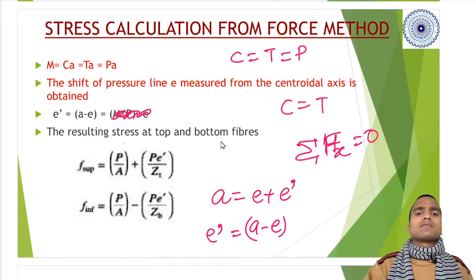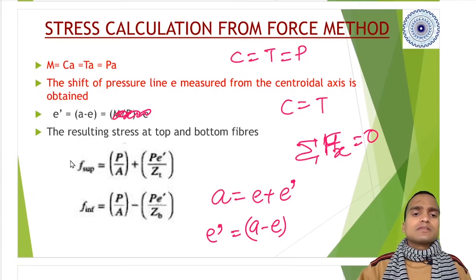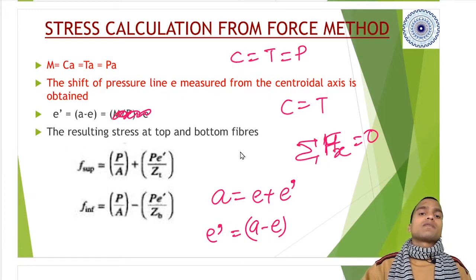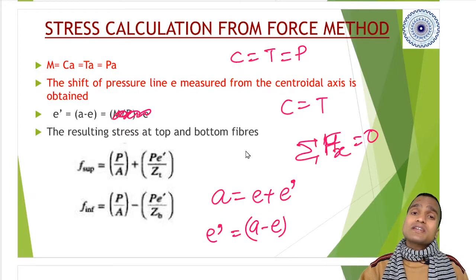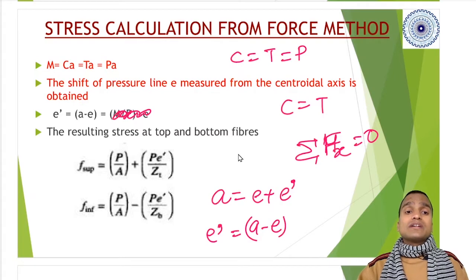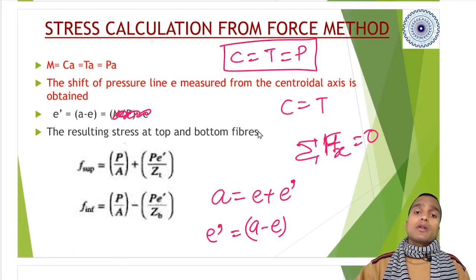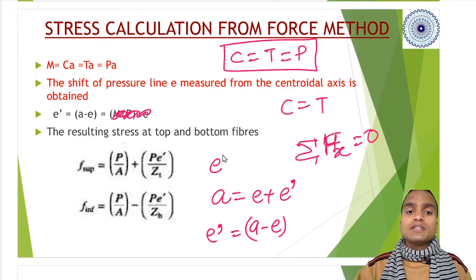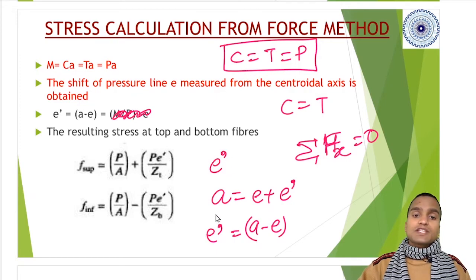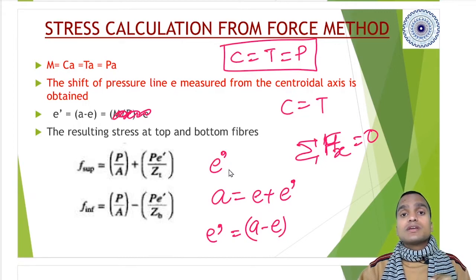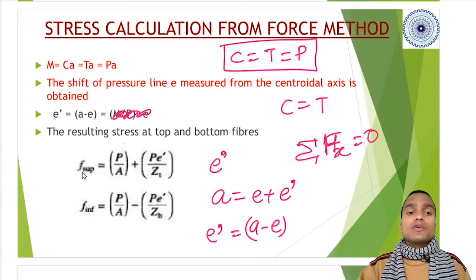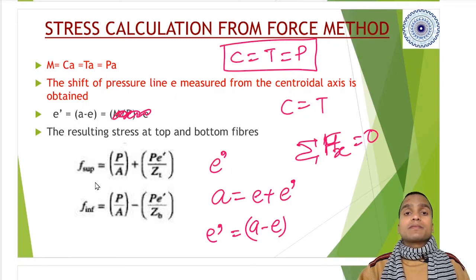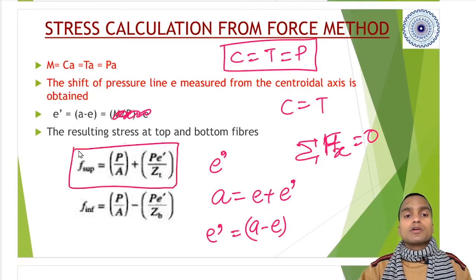Resulting stress at top and bottom fiber can be calculated through pressure line or thrust line. You don't have to do much - you already have force P and your eccentricity becomes e'. Eccentricity is always measured from the neutral axis. F top and F bottom can be calculated at the top most point and bottom most point.